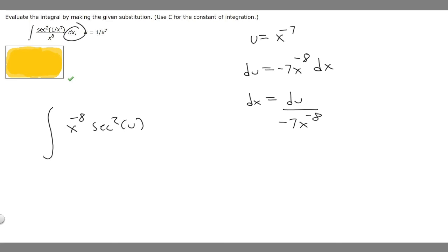And then we've got to replace dx. So dx we solved for is du over minus 7x to the minus 8. So we cancel out our minus 8s, and then we're just going to move the minus 1 over 7, because this is below. So minus 1 over 7 times the secant squared of u du.